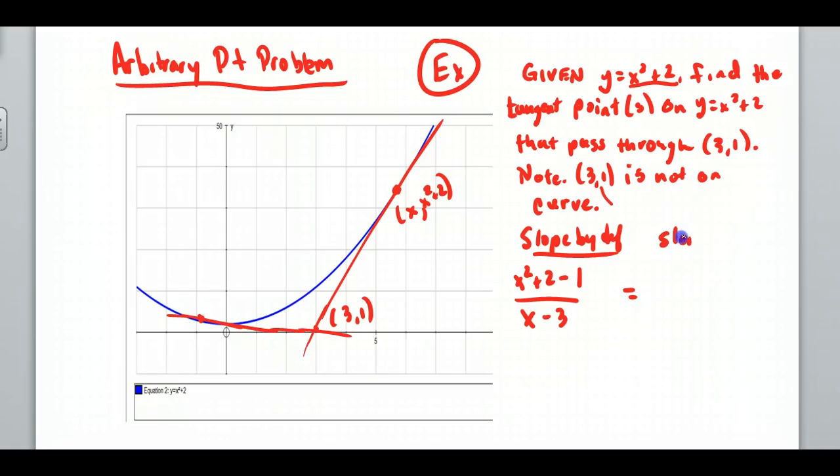Slope by definition is going to be x squared plus 2, that's my y, minus my y, all over my x minus my x, x minus 3. So I just get this from the slope. Then I have slope by derivative. It has to be the same here. So this would be y prime. I can write this up here. y prime is equal to 2x. So I get 2x. Slope by definition, the slope between these two points, and then slope by derivative. I take this derivative and plug in the x coordinate. Since I used x anyways, it just becomes this.